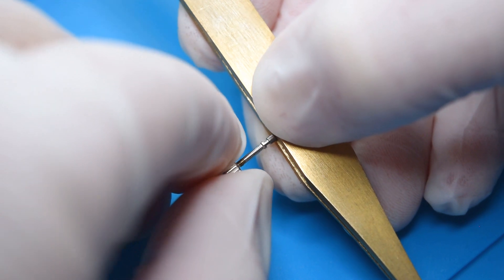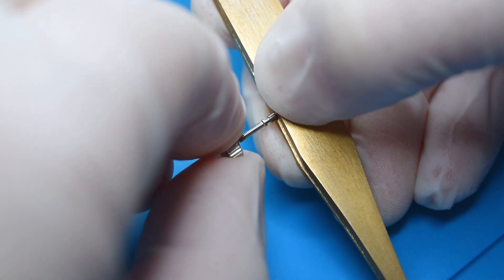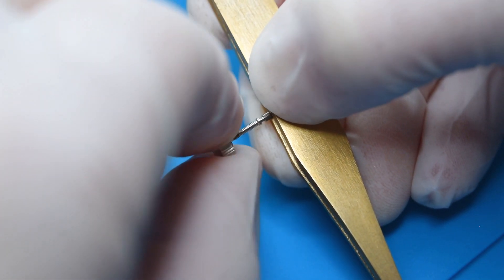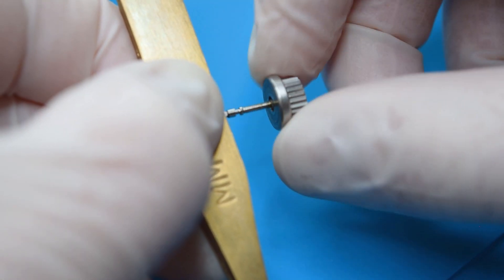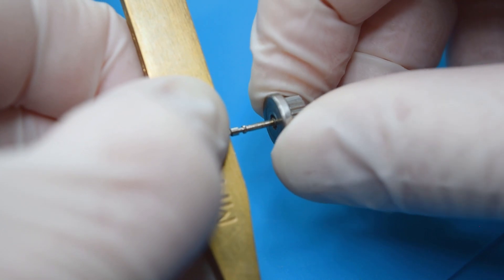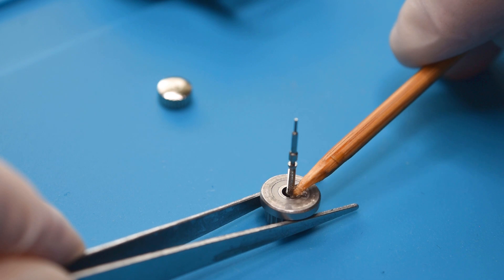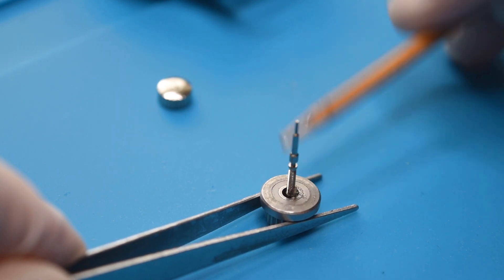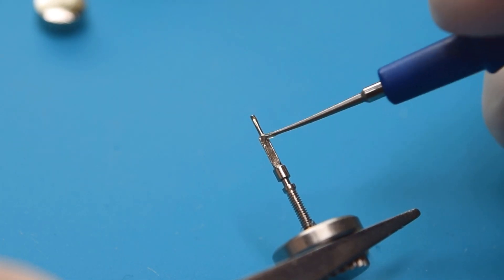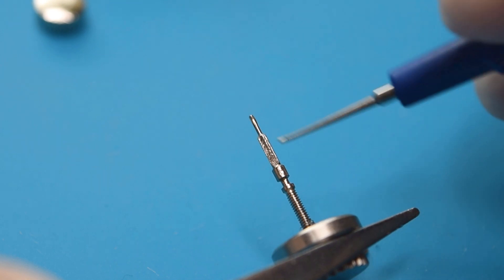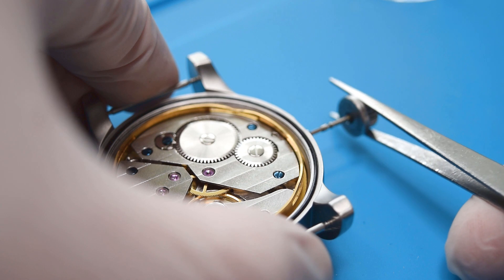Now I have to replace the crown. That's the original that comes with the movement and this one is from the watch case. I'm not shortening here the winding stem because it's already have the right length. Now some oil here. Maybe here a little bit too much. I think I can live with that. And the movement also.